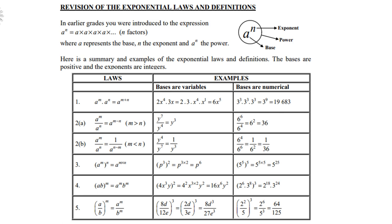Law number 2b: when m is less than n, the result goes to the denominator as 1 over a to the power n minus m. For example, y to the power 4 divided by y to the power 7 is 1 over y to the power 3. Take note: there is 1 left in the numerator, not nothing. And 6 to the power 4 over 6 to the power 6 is 1 over 6 to the power 2, which is 1 over 36.